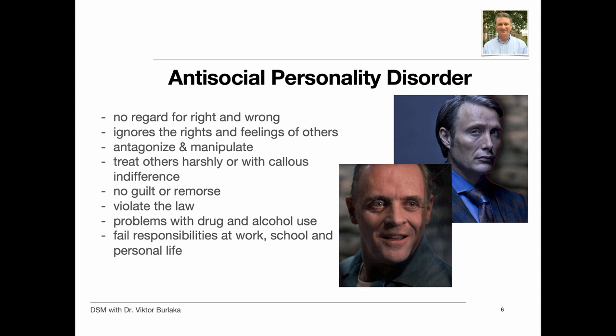Antisocial personality disorder is sometimes called sociopathy. It is a mental disorder in which a person consistently shows no regard for right and wrong and ignores the rights and feelings of others. People with antisocial personality disorder tend to antagonize, manipulate, or treat others harshly with callous indifference, showing no guilt or remorse. They often violate the law, becoming criminals. They may lie, behave violently or impulsively, and have problems with drug and alcohol use, making it difficult to fulfill responsibilities related to family, work, or school. Adults with antisocial personality disorder typically show symptoms of conduct disorder before the age of 15.